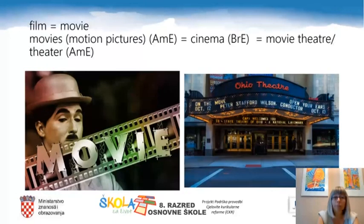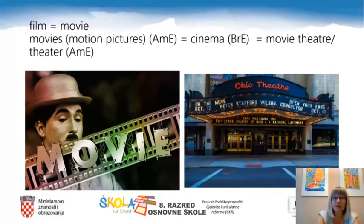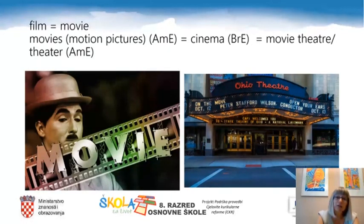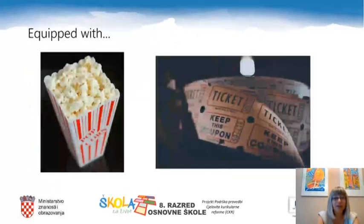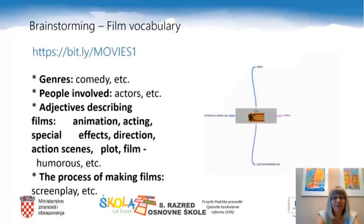Before we move on, let's have a look at these words. The word 'film' is actually of the same meaning as the word 'movie' — they are synonyms. In American English, 'movies' or 'motion pictures' is the same as 'cinema' in British English. Another word an American would use for movies would be 'movie theatre.' I'd like you now to imagine yourself standing in front of this beautiful movie theatre or cinema.